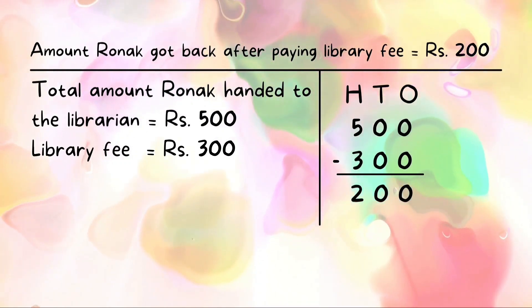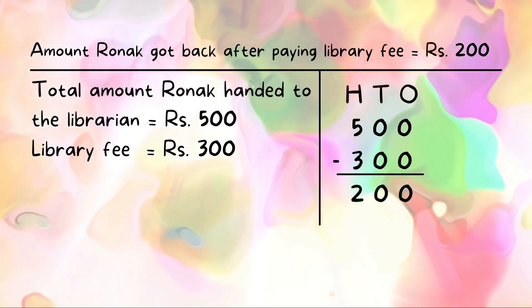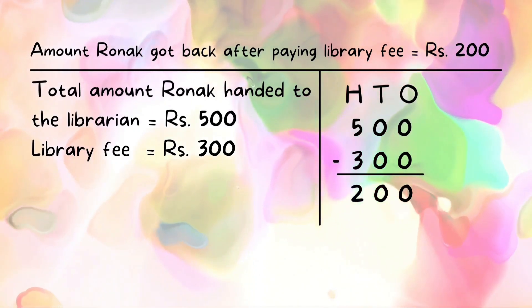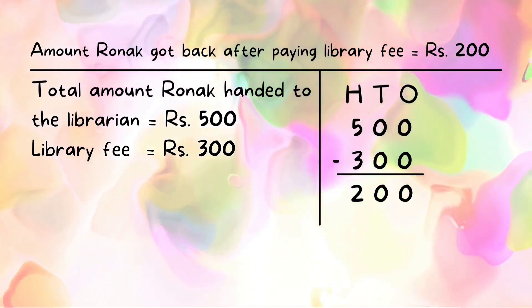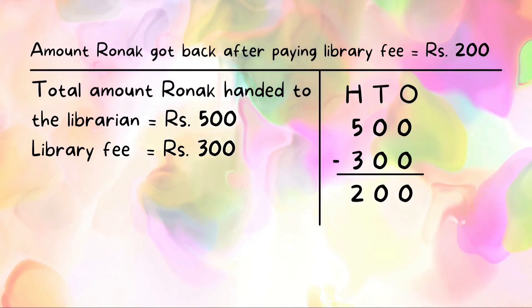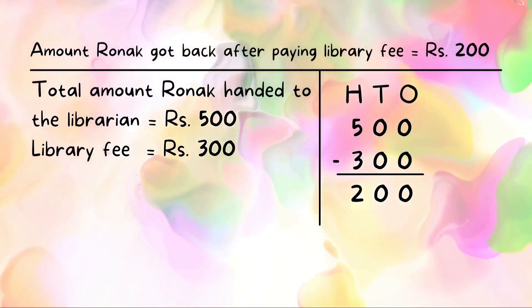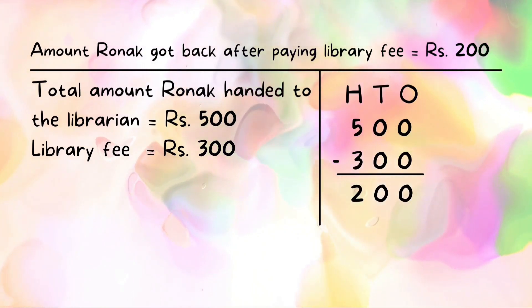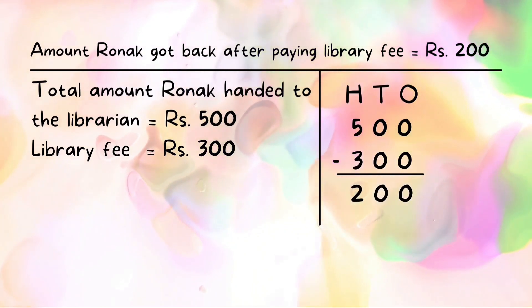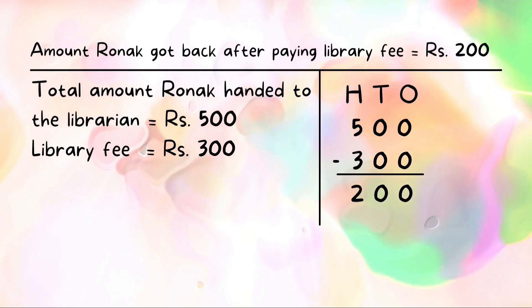Total amount Ronak handed to the librarian equals rupees 500, and the library fee equals rupees 300. Aligning the numbers according to their place values — ones, tens, hundreds — 500 minus 300 gives us 200. Therefore, the amount Ronak got back after paying the library fee equals rupees 200. As mentioned, alignment is very important for calculations.